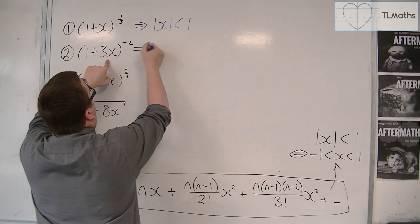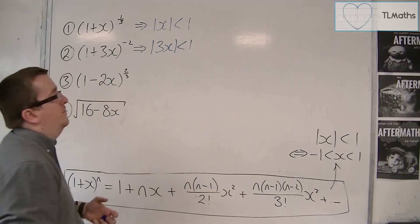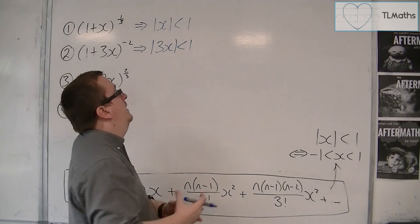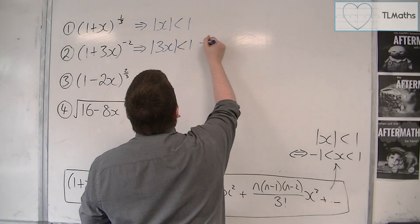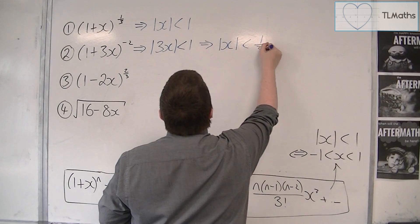And so what we would have is the modulus of 3x is less than 1. But because that's not in particularly nice format, we can divide both sides by 3. And so we'd have mod x is less than 1 third.